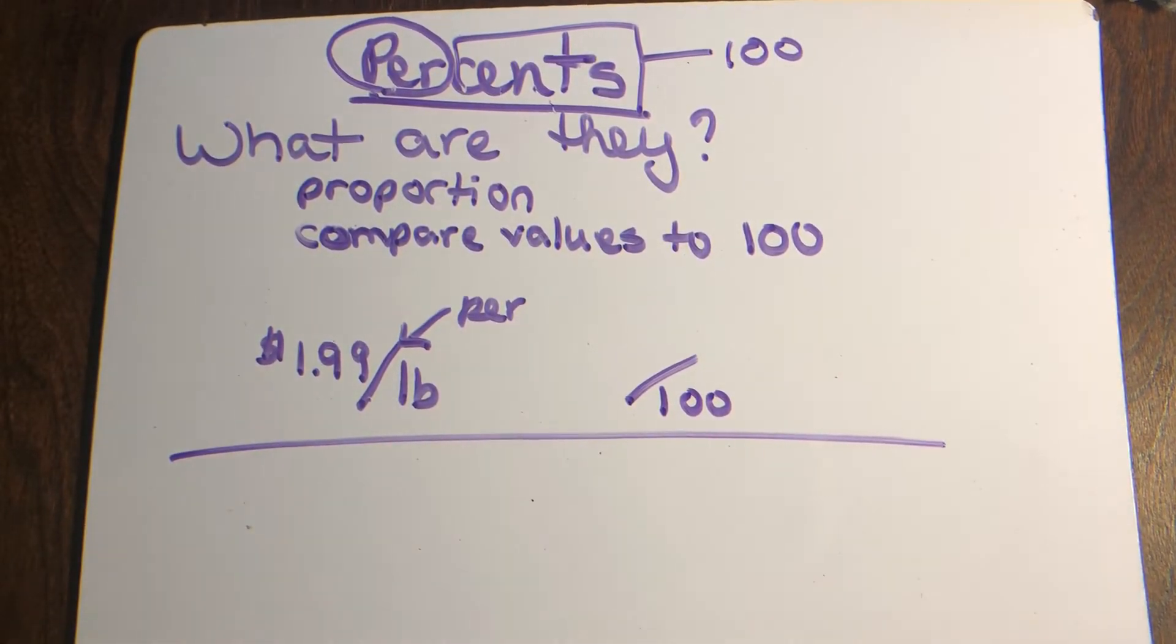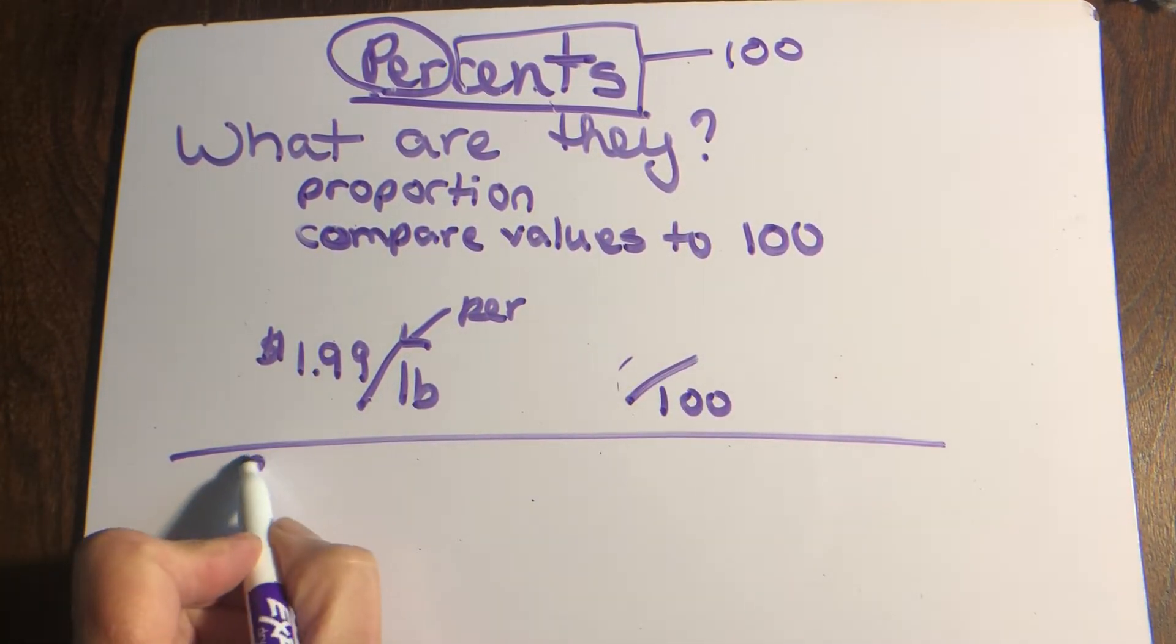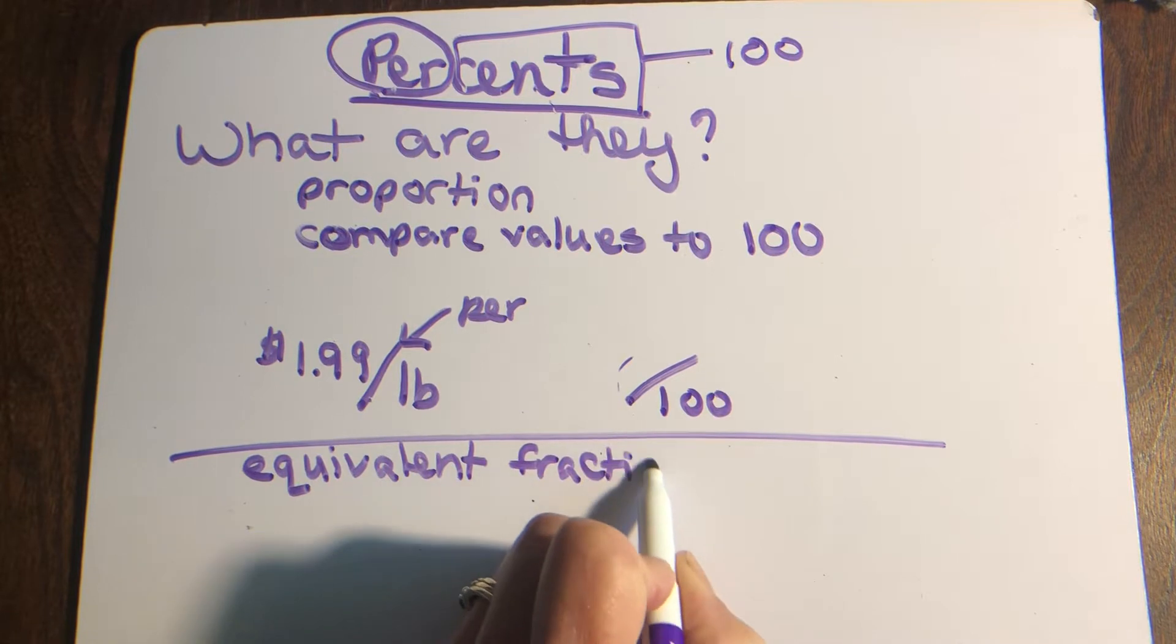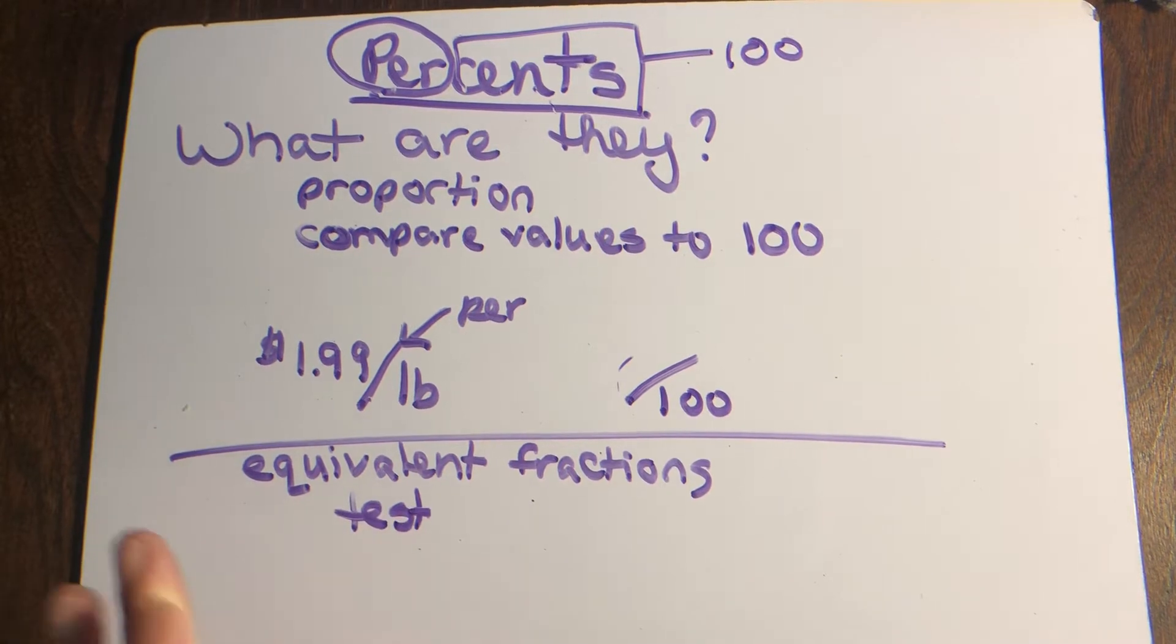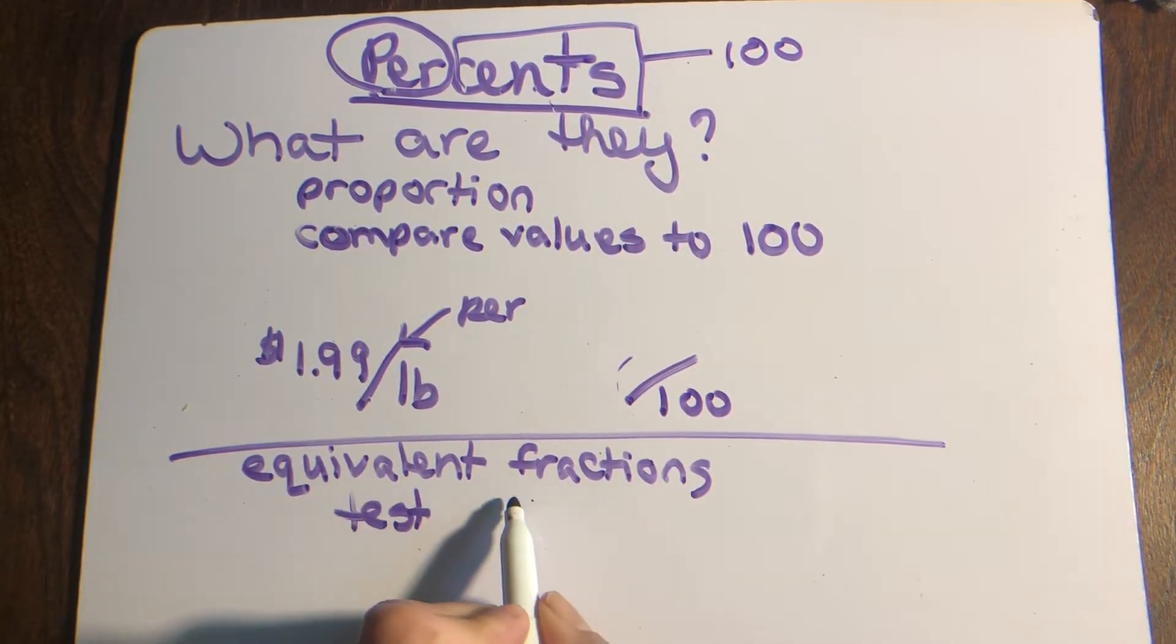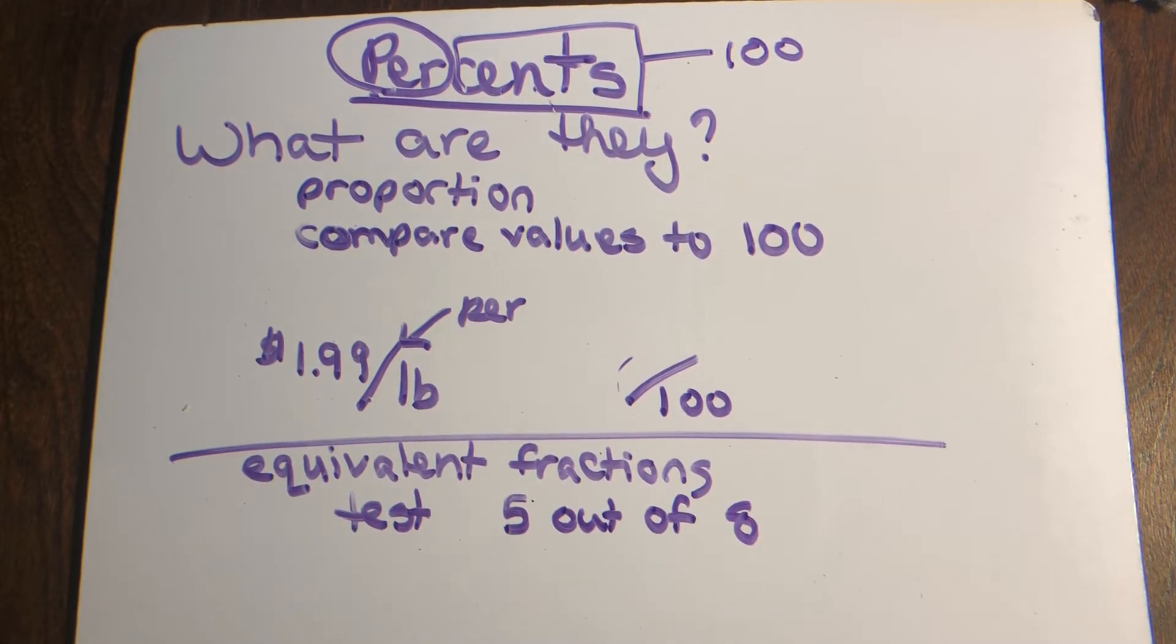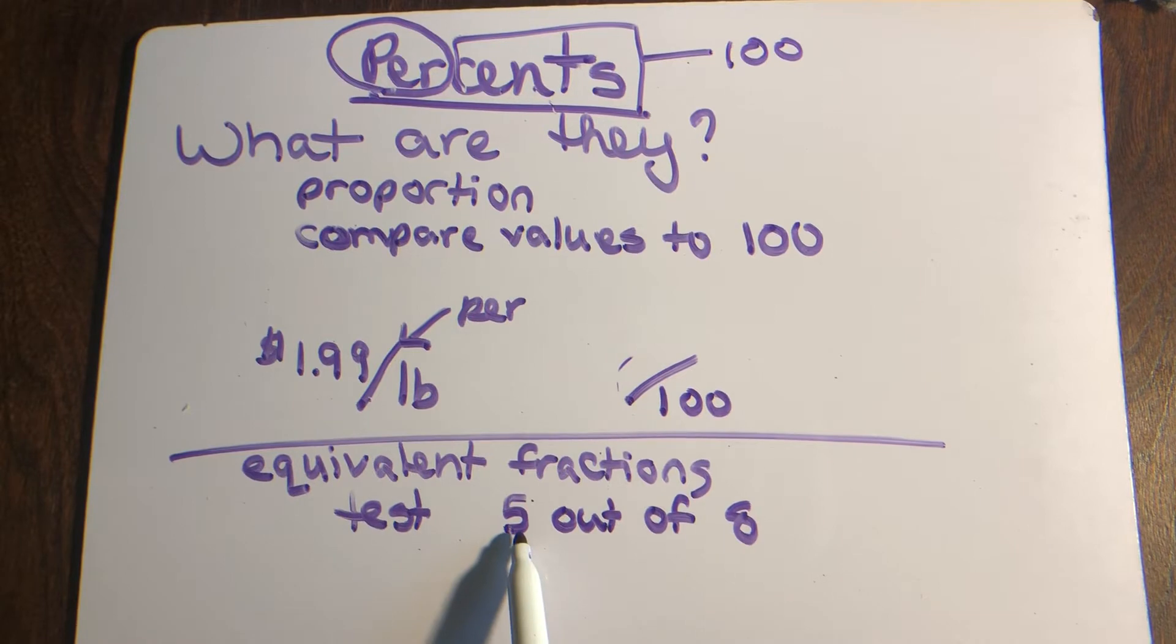It's basically a proportion that we compare to 100. Remember when we talked about equivalent fractions? Let's talk about a test score. When I used to teach high school, I'd have a student who made five out of eight questions correct, and they'd say 'Oh, so I only missed three problems, so I got a 70 or a 97.' That's not how that works.